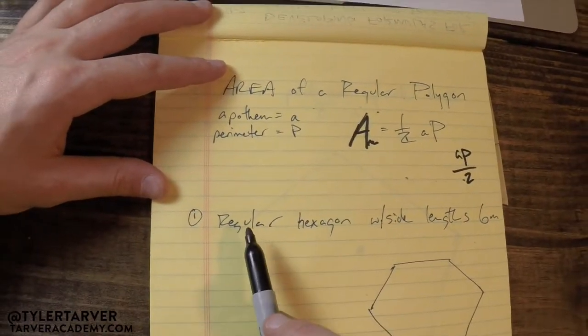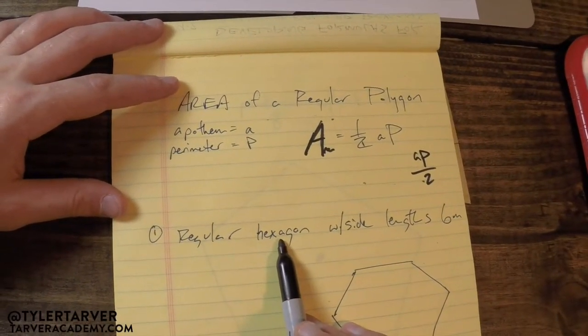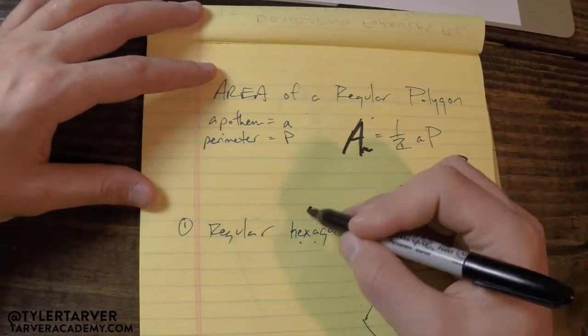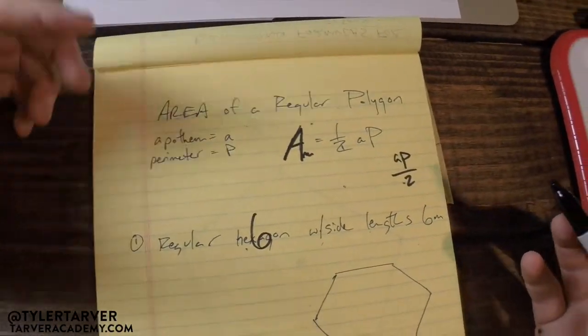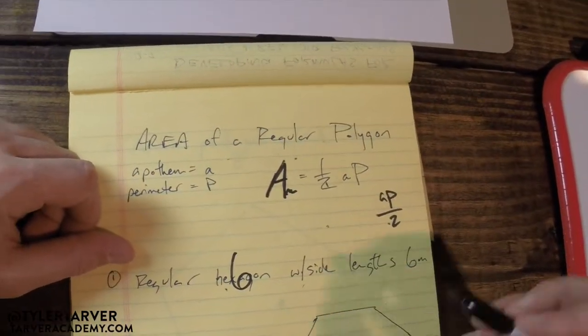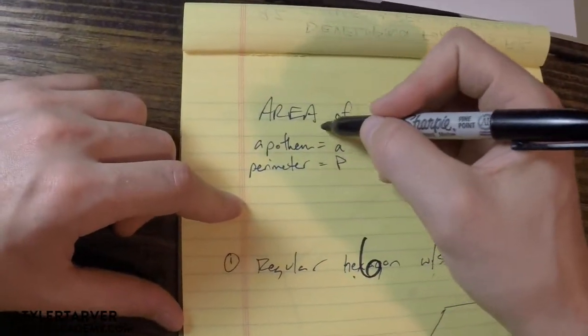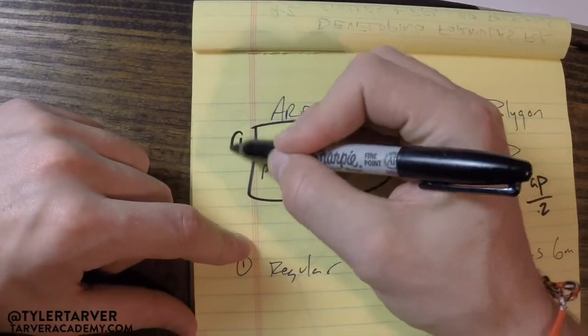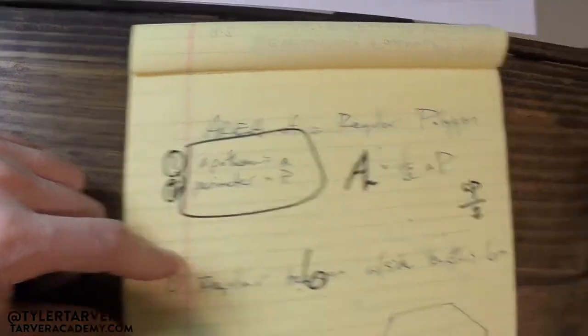So let's look at our first example. Regular hexagon, which means there are six sides with side lengths of six meters. So we know our sides are six meters, so only two things we got to find in here are our apothem, it's the first thing we got to find, and perimeter, second thing we got to find.